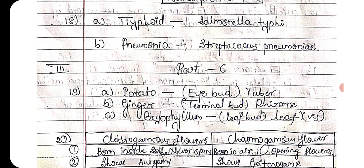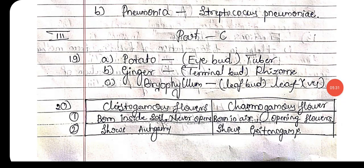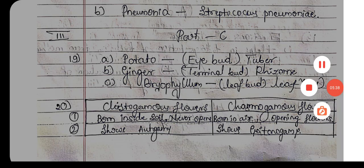Eighteenth one: the scientific names of pathogens. First, typhoid is caused by Salmonella typhi. Second, pneumonia is caused by Streptococcus pneumoniae. The remaining answers for parts C, D, and E you can check on your own. Thank you.